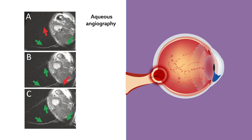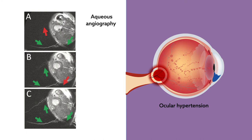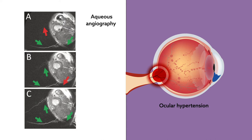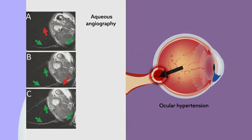In conventional outflow, growing evidence suggests ocular hypertension may be an expansion of normally low-flow segmental areas. Further research could improve understanding of why intraocular pressure increases in disease and how to lower it by modified drug and surgical approaches.